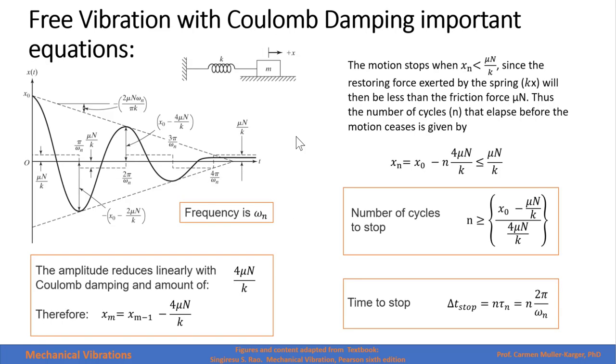This is the typical graph for a Coulomb damping. The amplitude reduces linearly in every cycle. Therefore, the magnitude of one cycle will be the magnitude of the previous cycle minus 4μN/k.